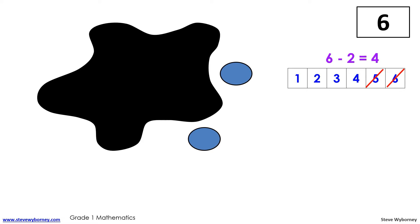Is there another way you could figure out how many dots are under the splat? Maybe you figured out how many dots are under the splat by starting at two and counting up to six like this: three, four, five, six and saw that you counted four numbers. So there are four dots under this splat. What number sentence could match this strategy? Two plus four equals six.